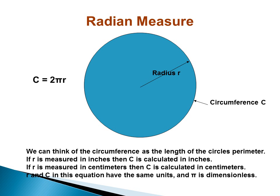We can think of the circumference as the length of the circle's perimeter. So if r is measured in inches, then c the circumference is calculated in inches. If r is measured in centimeters, then c is calculated in centimeters. If r and c have the same units, then pi is dimensionless.